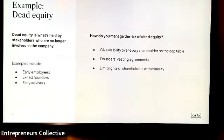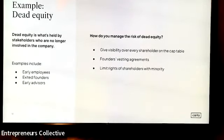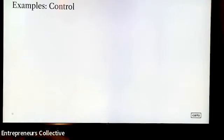Dead equity is also a control problem. If you've given away a lot of equity to people who are no longer interested, that can affect the governance of your company — for example, needing 75% approval but being unable to reach shareholders who are unreachable. A way to minimize that disruption is to insert rights that limit the governance rights of minority shareholders. This is very common for those holding less than 5%. In more extreme cases, you can buy the person out and redistribute appropriately, though that is very costly.